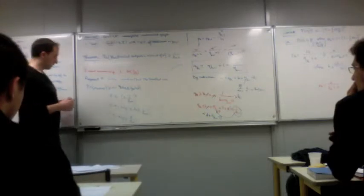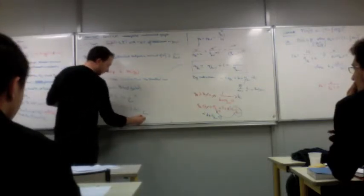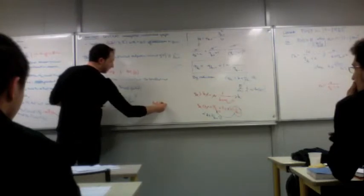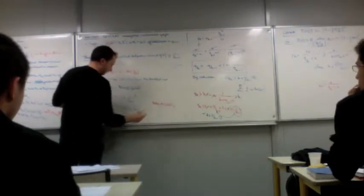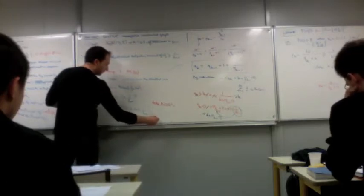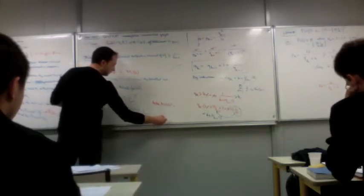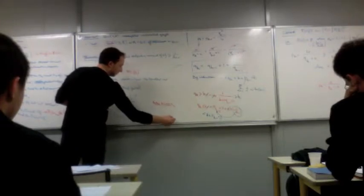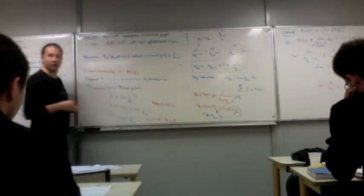So take K equals 2 log squared n, and we get 1 minus exponential of minus 2 log n, which is 1 minus 1 over n squared.